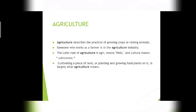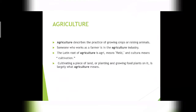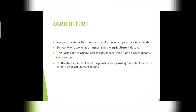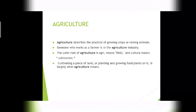What is agriculture? First, we break the term into agri and culture. The word agriculture is derived from two Latin words: agri and cultura. Agri means field or farms, and cultura means cultivation. Agriculture refers to the science and art of cultivating plants and animals to obtain food, wool, and other products. It describes the practice of growing crops or raising animals.